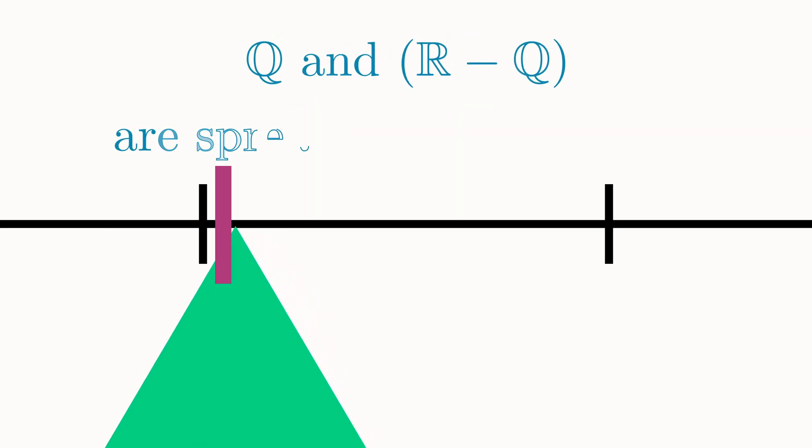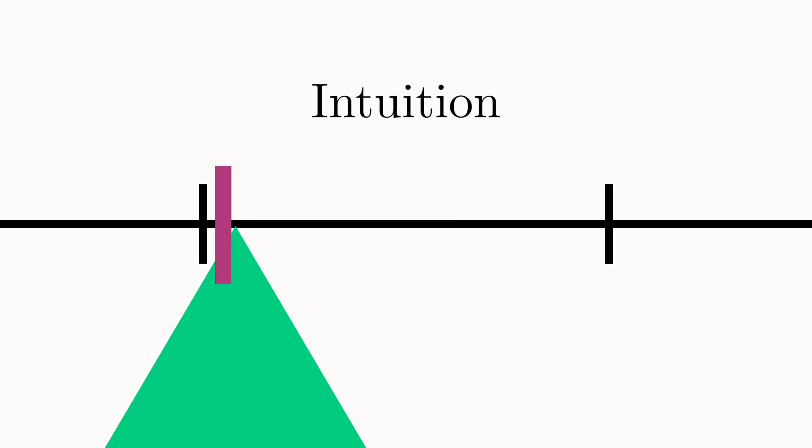So both the rationals and the irrationals are spread throughout the entire interval, yet the irrationals somehow occupy way more of it. This really seems to go completely against our intuition, or at least it went against mine when I first learned it. But here's one analogy that I found helpful in trying to think about it intuitively.